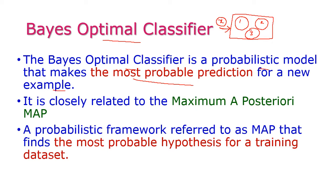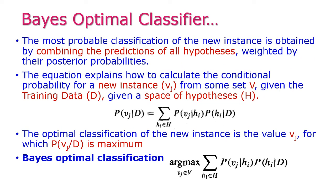This is closely related to the maximum a posteriori hypothesis — a probabilistic framework referred to as MAP that finds the most probable hypothesis for the training dataset. By using this optimal classifier we can easily classify the new sample. The most probable classification of new instances is obtained by combining the predictions of all hypotheses weighted by their posterior probabilities.